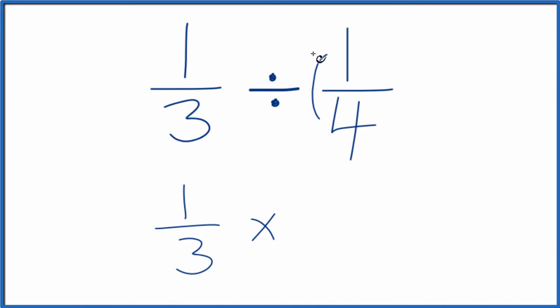For the reciprocal, we'll move the four up top and the one down on the bottom. So we have four on top, that's our numerator, and one is our denominator.